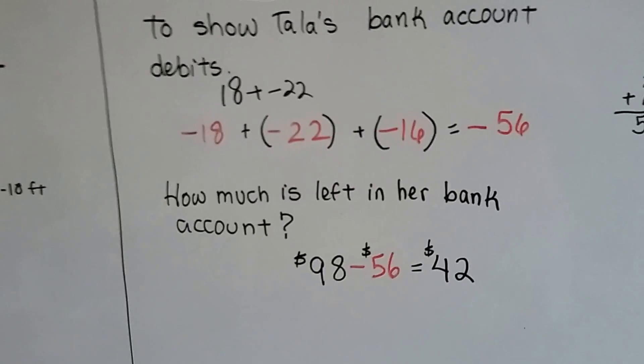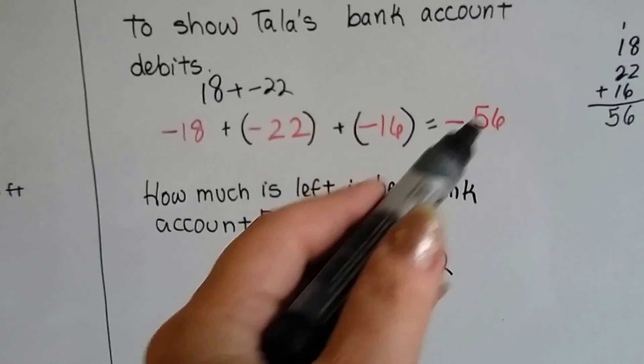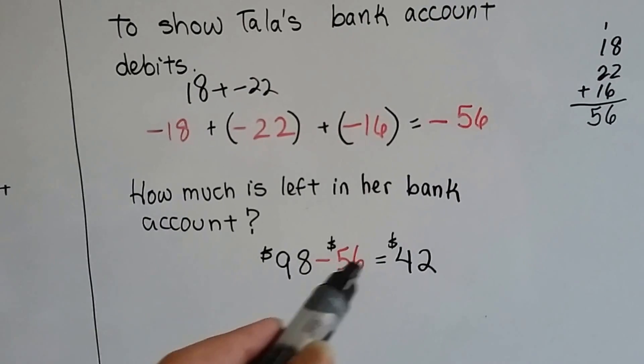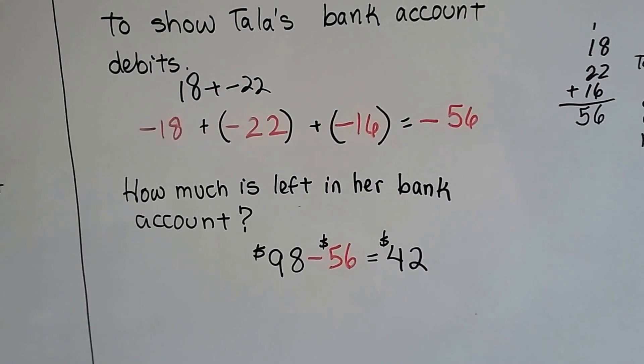So how much is left in her bank account? Well, she had $98. We have a negative 56 that leaves 42. See? So that's how much she's got left.